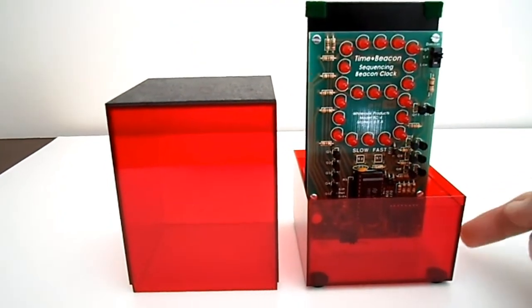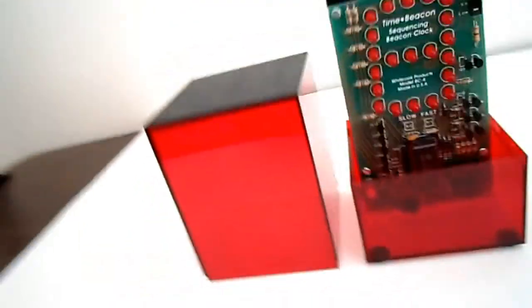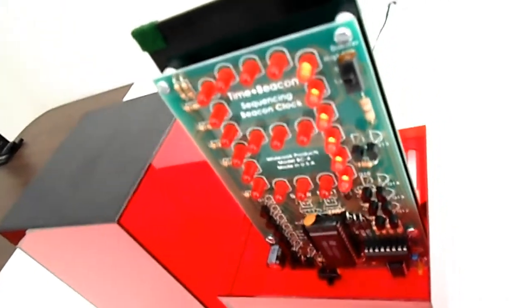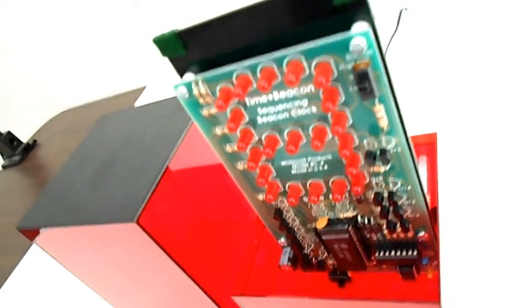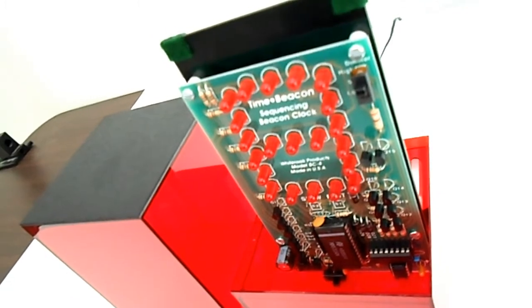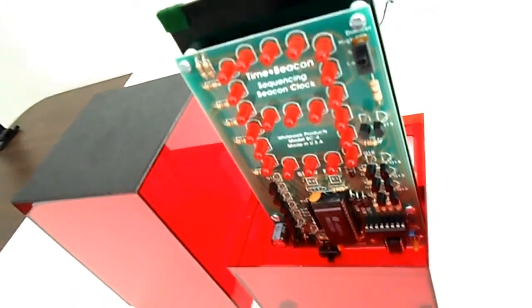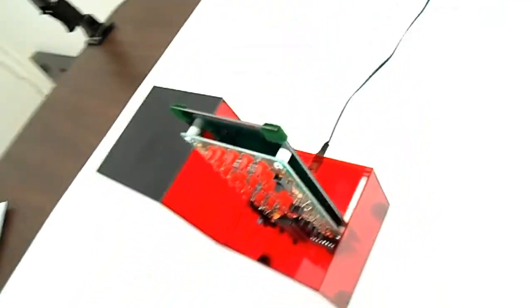The circuit board is completely in the open and viewable, making the BC-4 a classic see-the-works style clock design, very cool to look at.